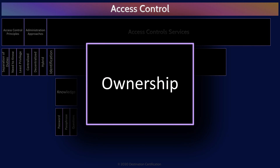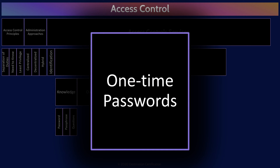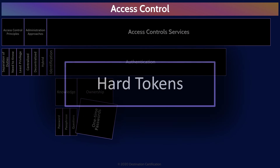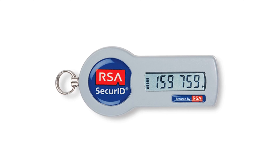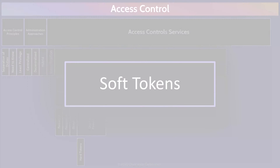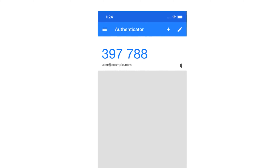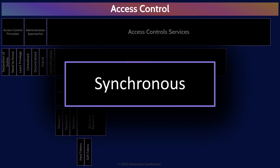The second factor of authentication is ownership, also referred to as something you have. Authentication by ownership are things that we have in our possession. The most common form of authentication by ownership is one-time passwords. We call them one-time passwords because they are only meant to be used once. Hard tokens are dedicated pieces of hardware that generate one-time passwords, such as an RSA ID key. Soft tokens are apps — software that generate one-time passwords — such as the Microsoft or Google Authenticator apps that we can install on our mobile phones.